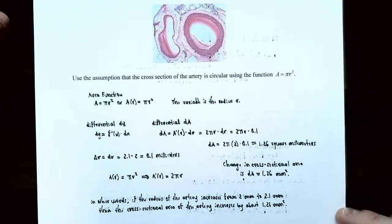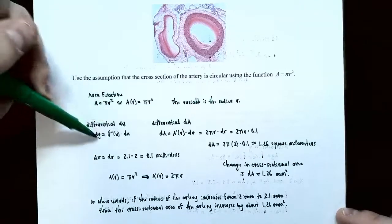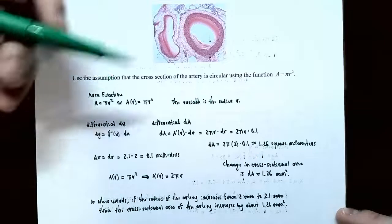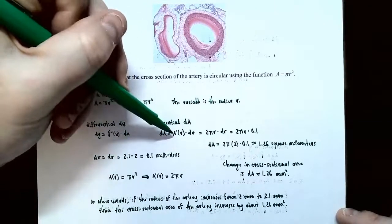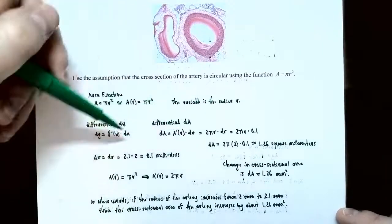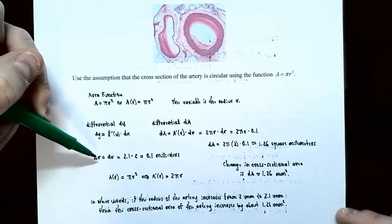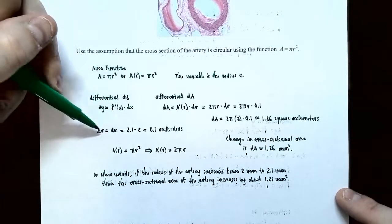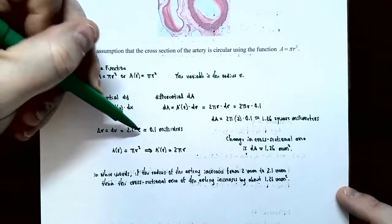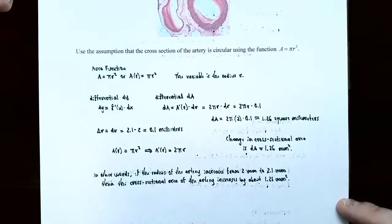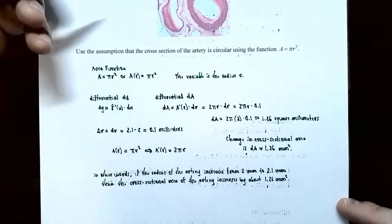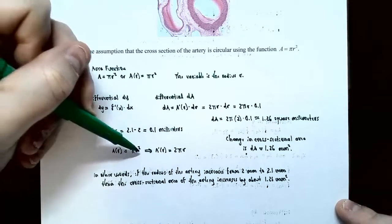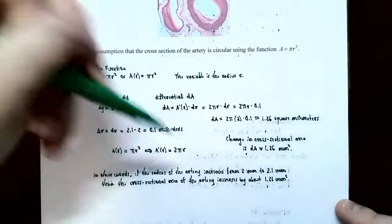We approximate using differentials. The differential formula adapted for area and radius is: dA equals the derivative of A with respect to r, evaluated at r, times dr. The actual change in radius: delta r equals dr equals 2.1 minus 2, so the artery expanded by 0.1 millimeters. The derivative of A of r equals pi r squared is 2 pi r, since pi is a constant and the derivative of r squared is 2r.